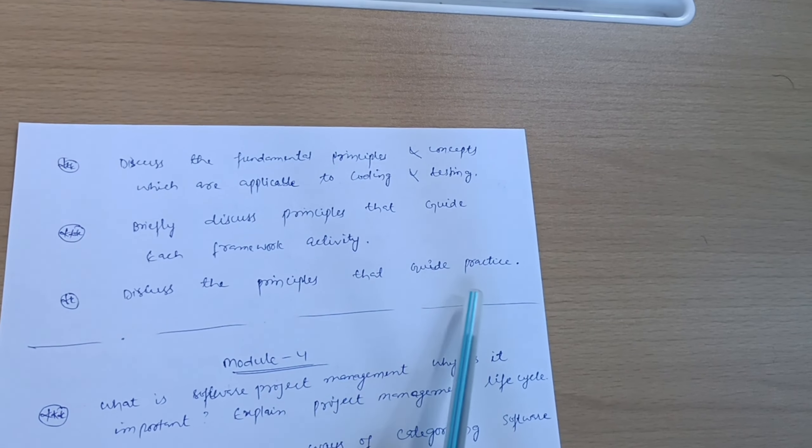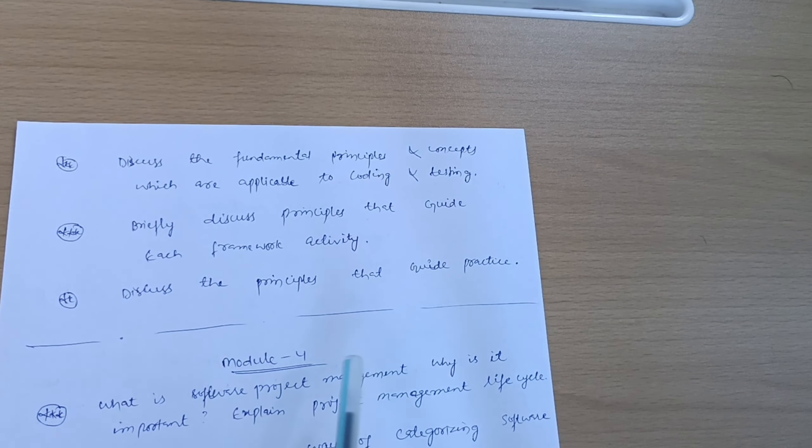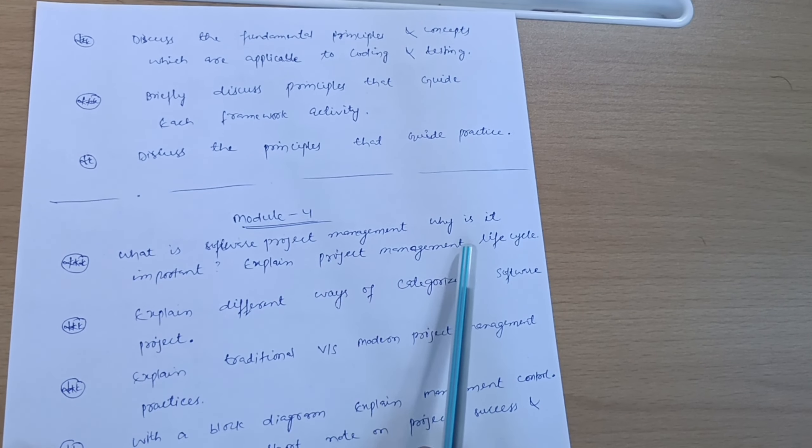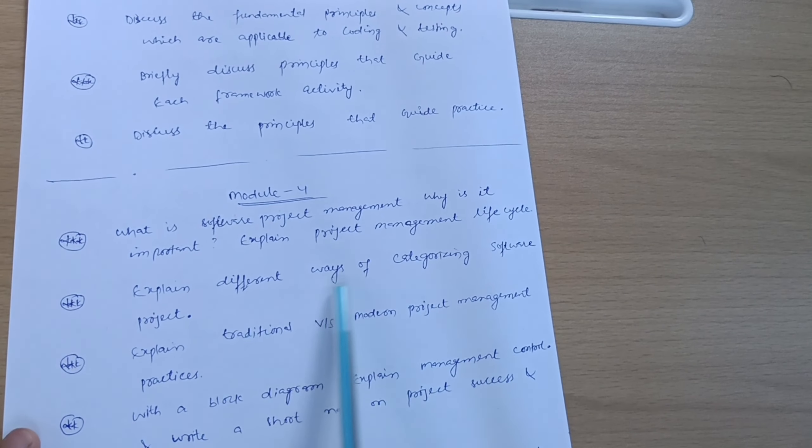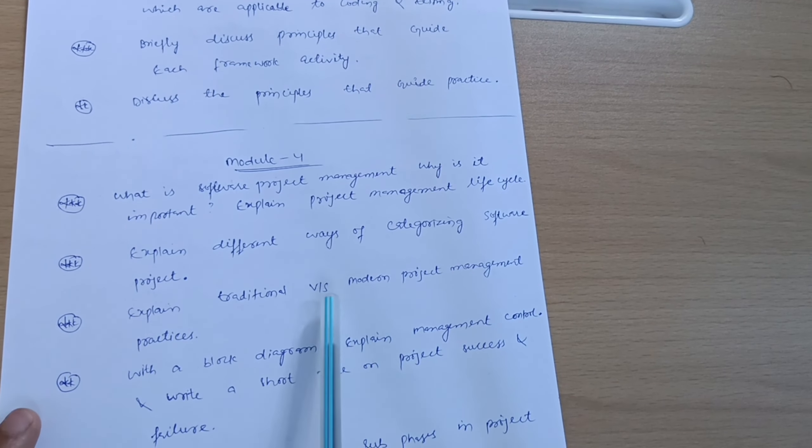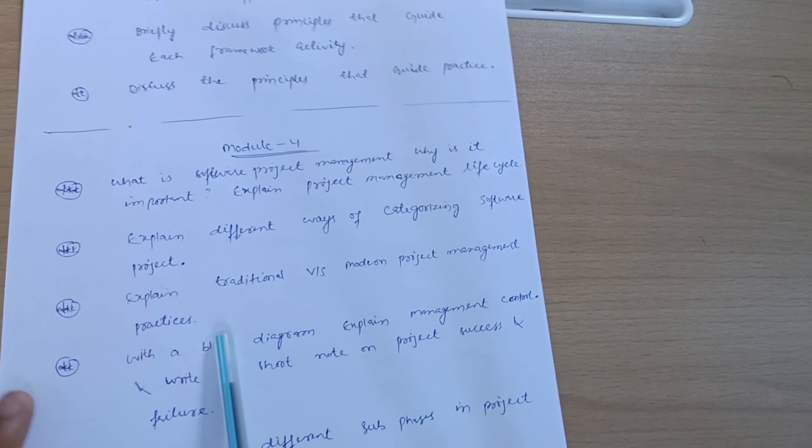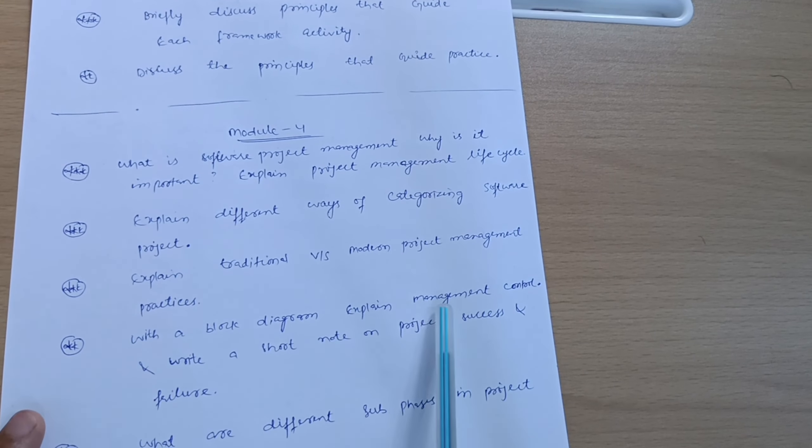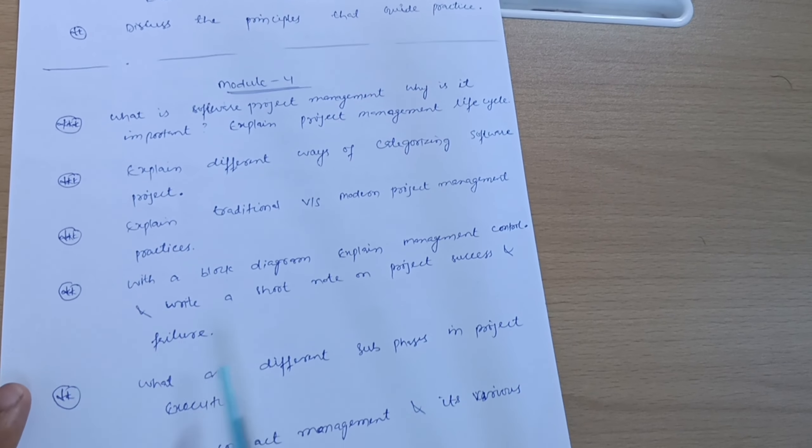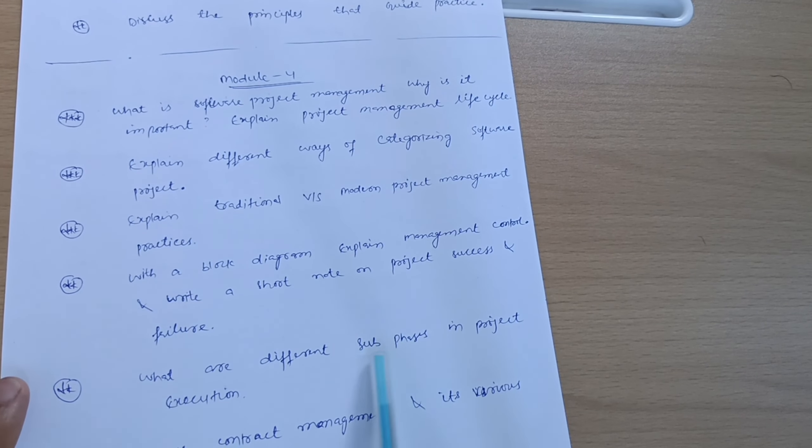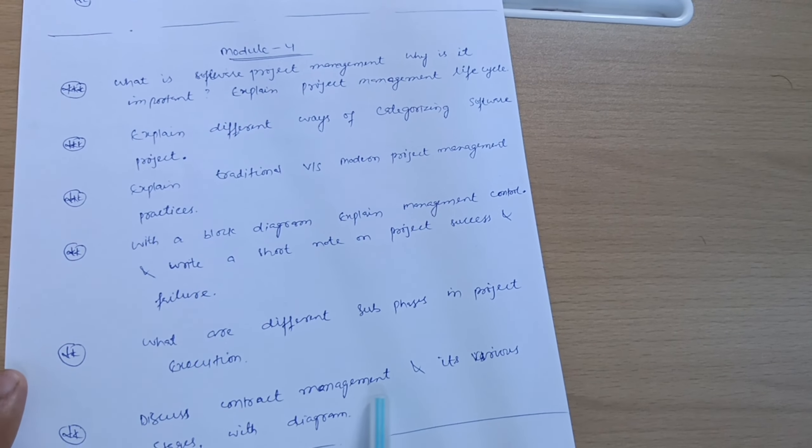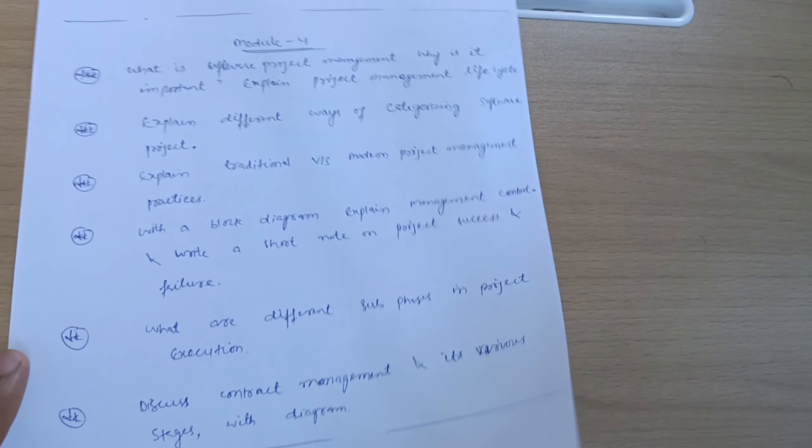Module 4: What is software project management? Why is it important? Explain project management life cycle. Explain different ways of categorizing software projects. Explain traditional versus modern project management practices. With a block diagram, explain management control. Write a short note on project success and failure. What are different sub-phases in project execution? Discuss contract management and various stages with diagram.